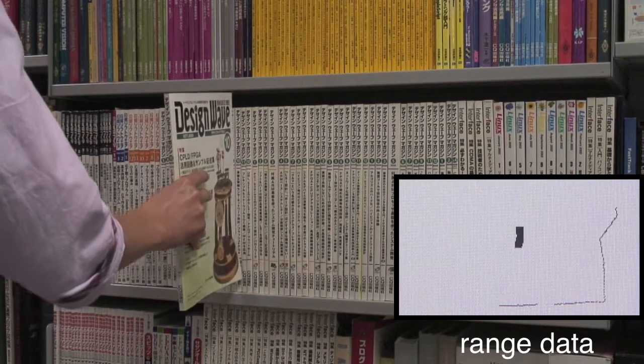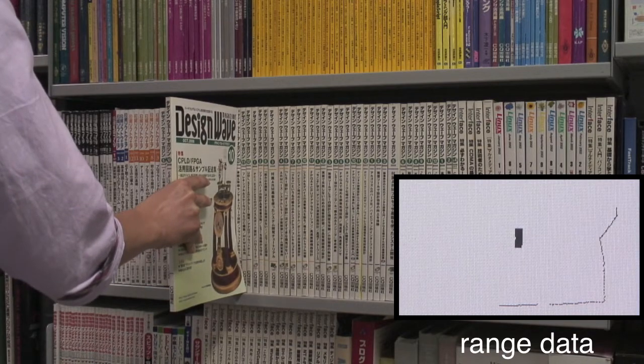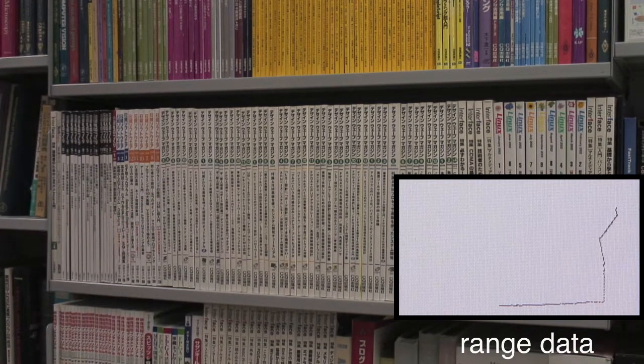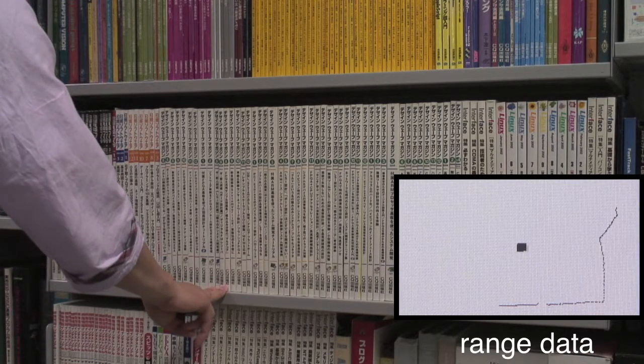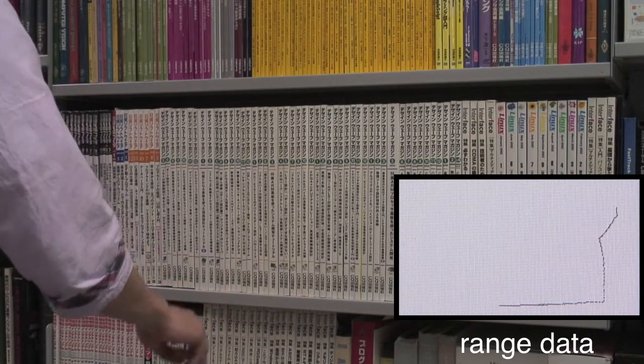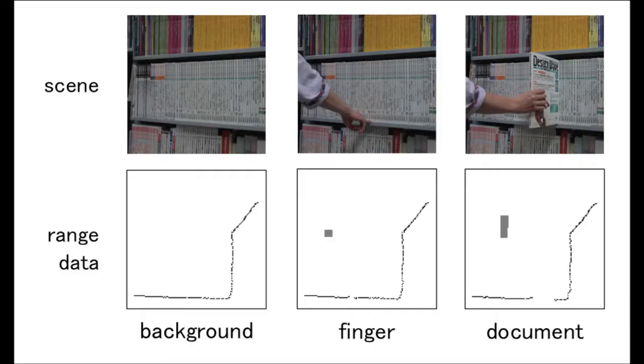The system distinguishes between stored books and the user's finger while they are crossing the sensitive plane. We apply a simple background subtraction technique to capture the range data in order to extract consecutive points of the intrusion data. Then, a simple thresholding process is applied to the number of consecutive points for the recognition.